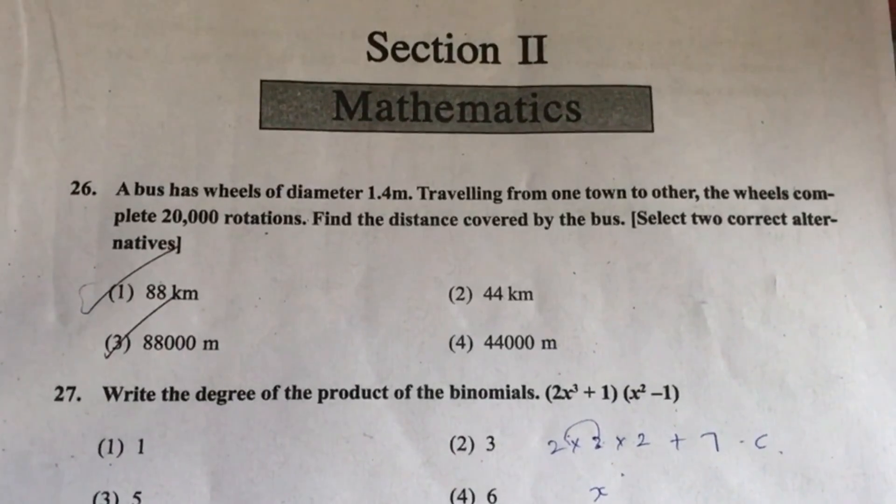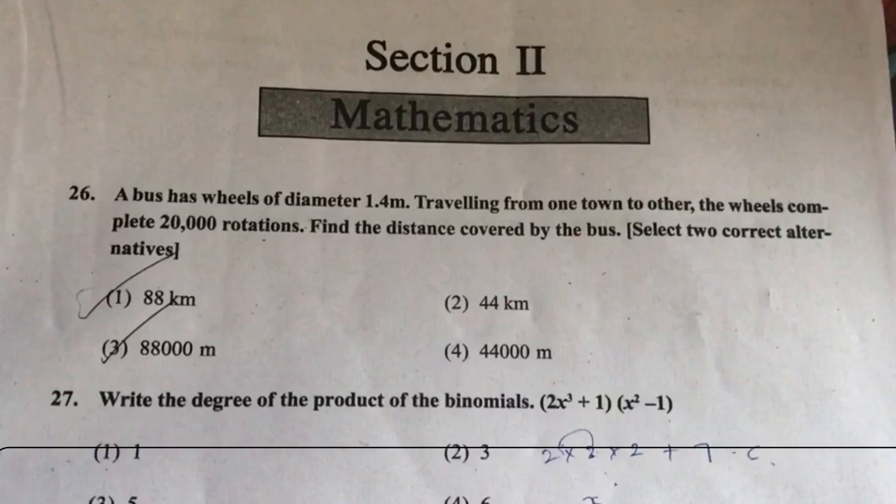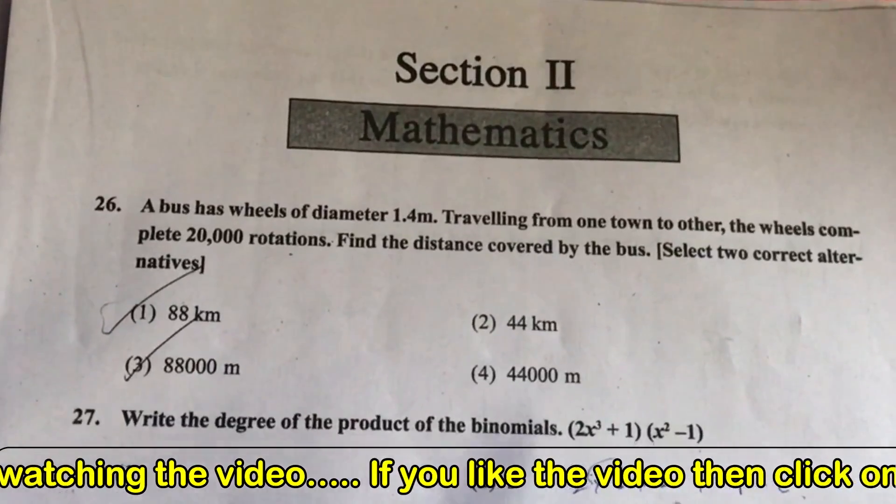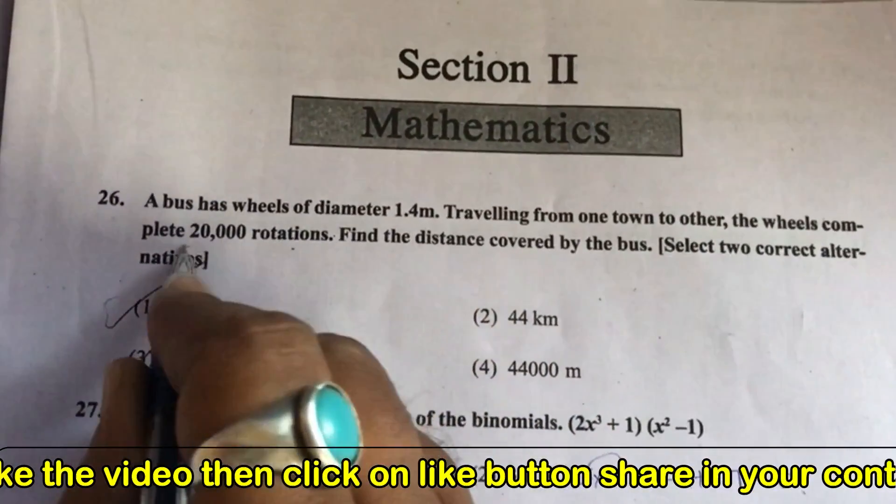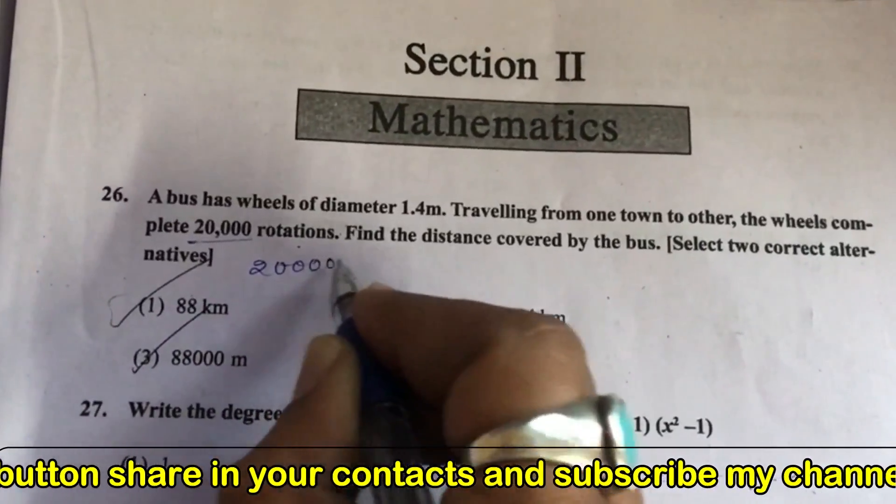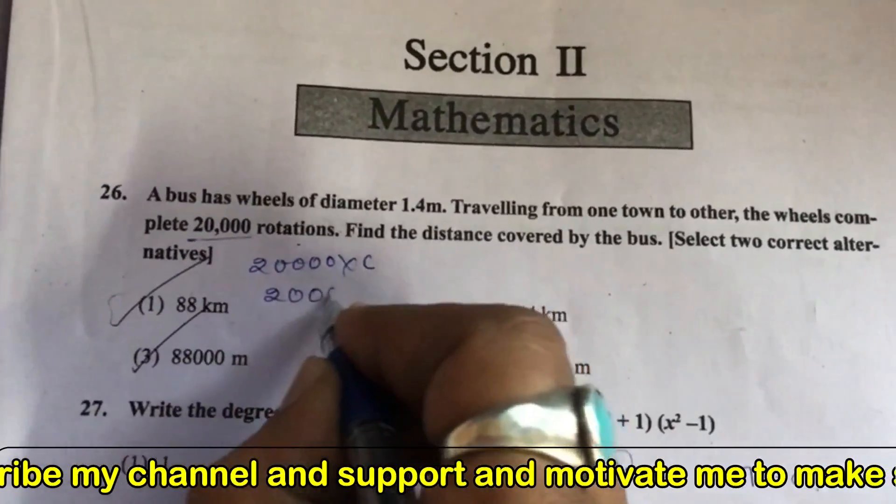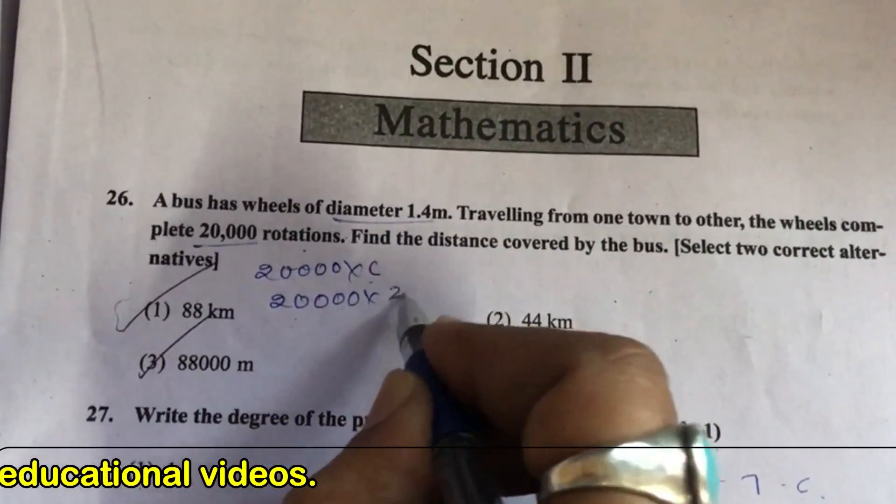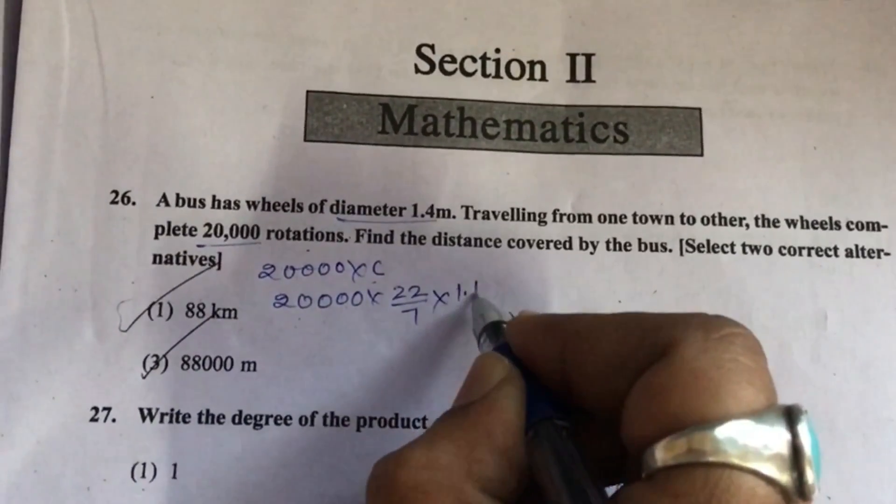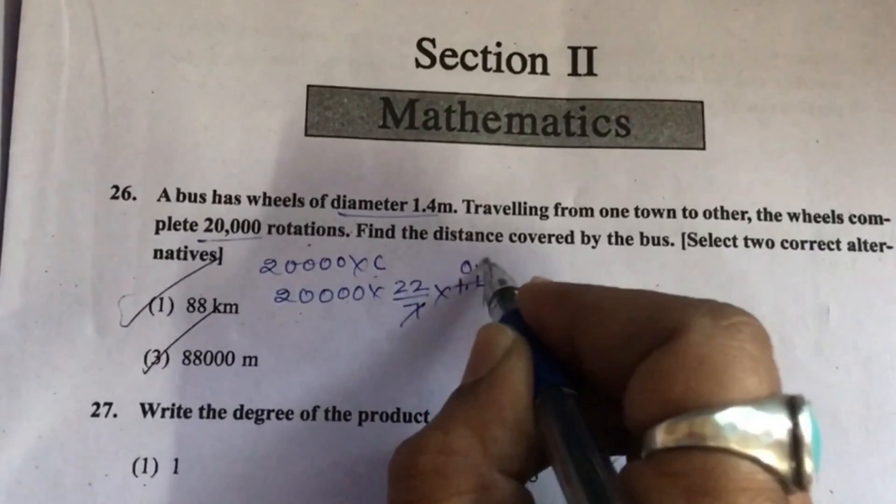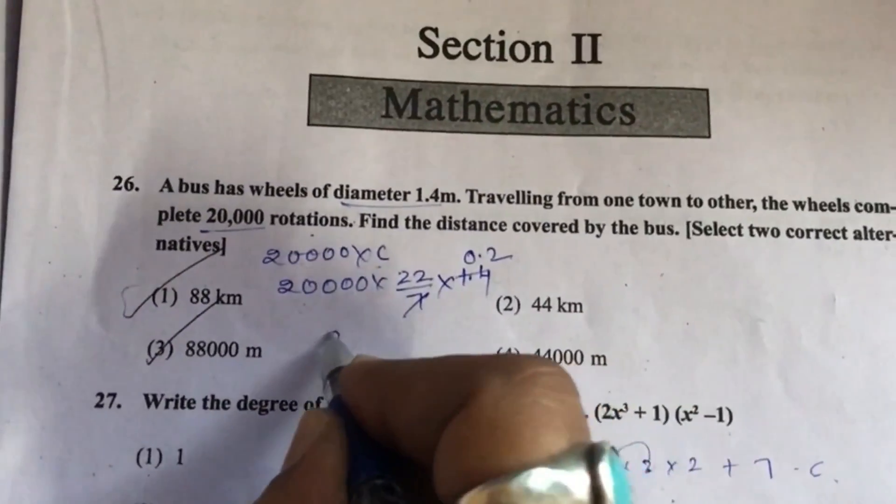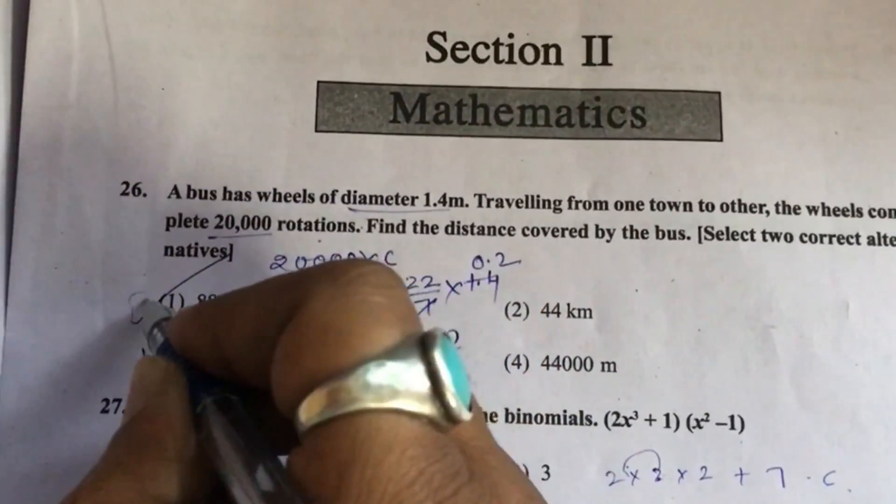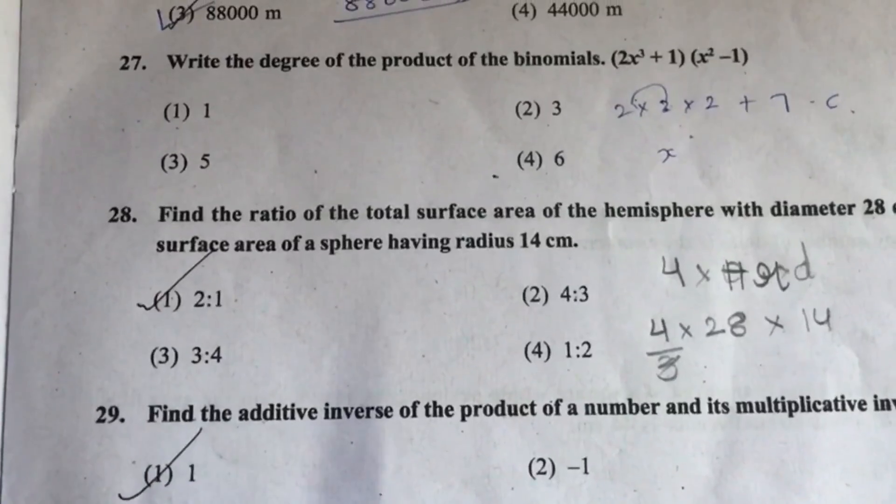Question 26: A bus has wheels of diameter 1.4 meter traveling from one town to another. The wheels complete 20,000 rotations. Find the distance covered by the bus. One rotation equals one circumference, so 20,000 rotations is 20,000 into circumference. That is 20,000 times diameter 1.4 times 22 upon 7. Multiply all this, we will get 88,000 meters.